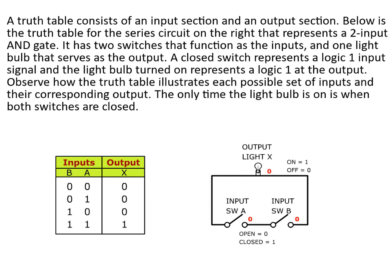A closed switch represents a logic 1 input signal and the light bulb turned on represents a logic 1 at the output. Observe how the truth table illustrates each possible set of inputs and their corresponding output. The only time the light bulb is on is when both switches are closed.